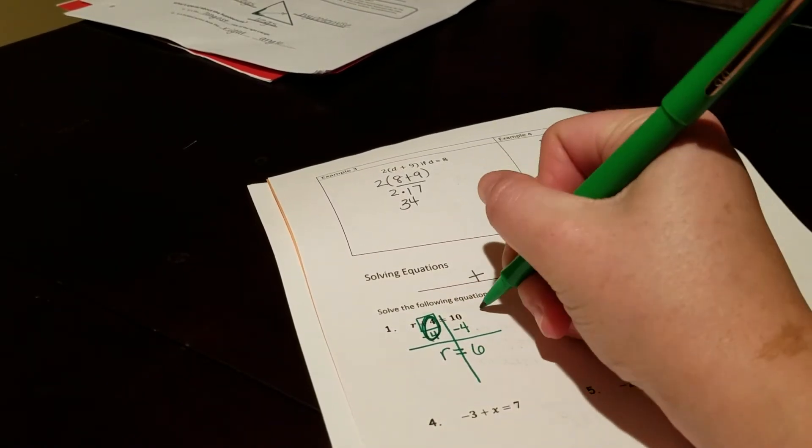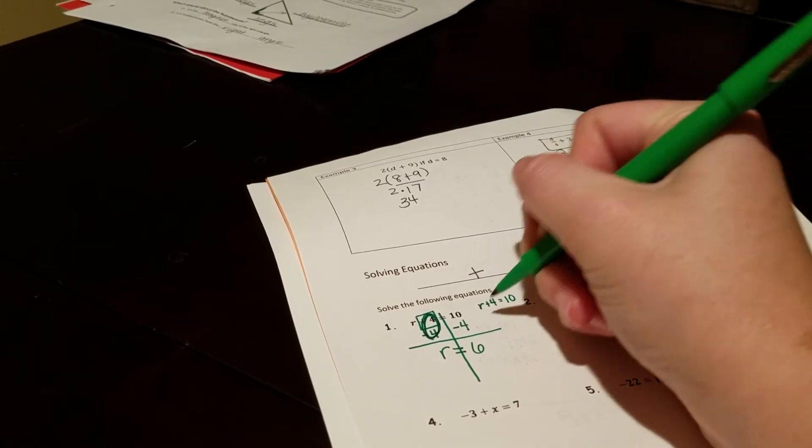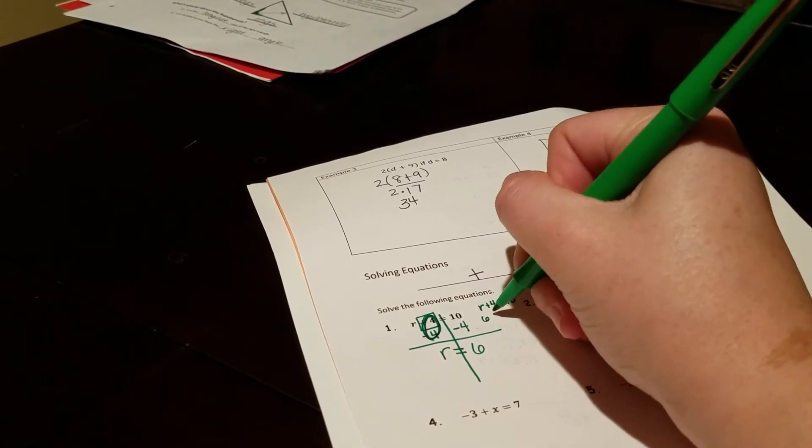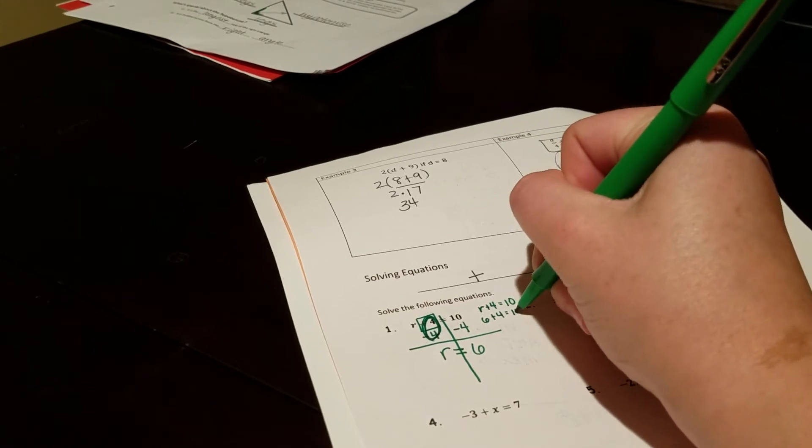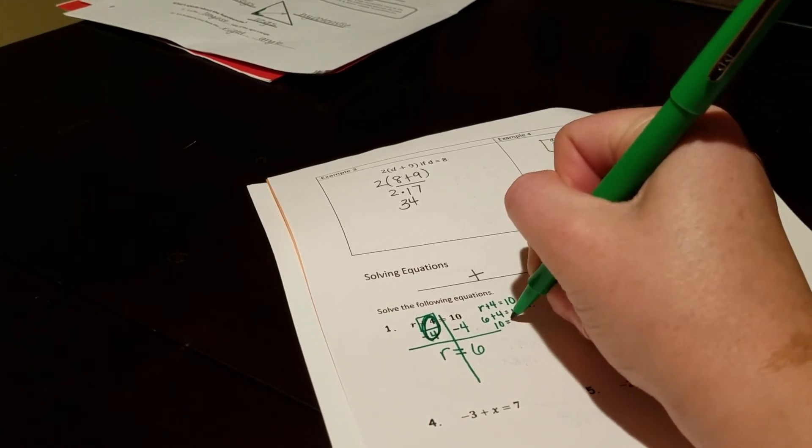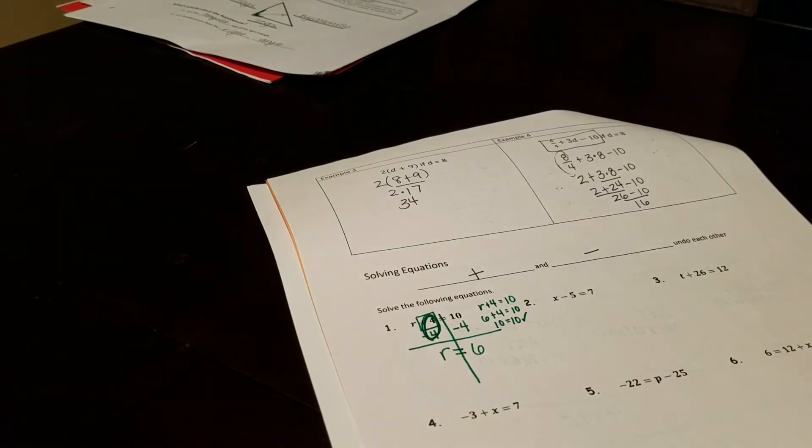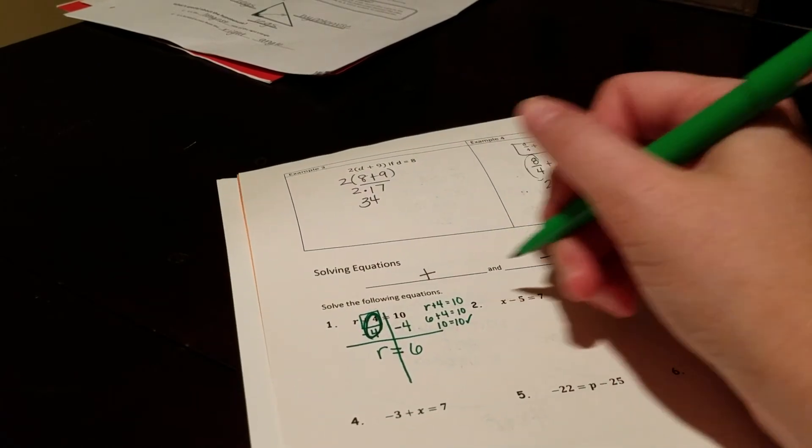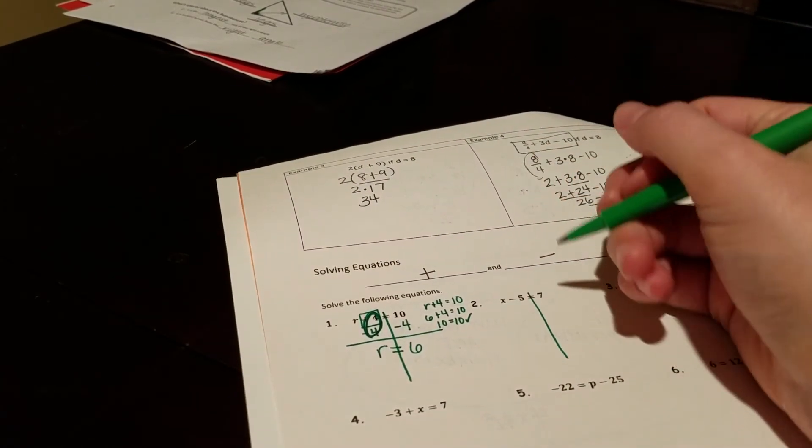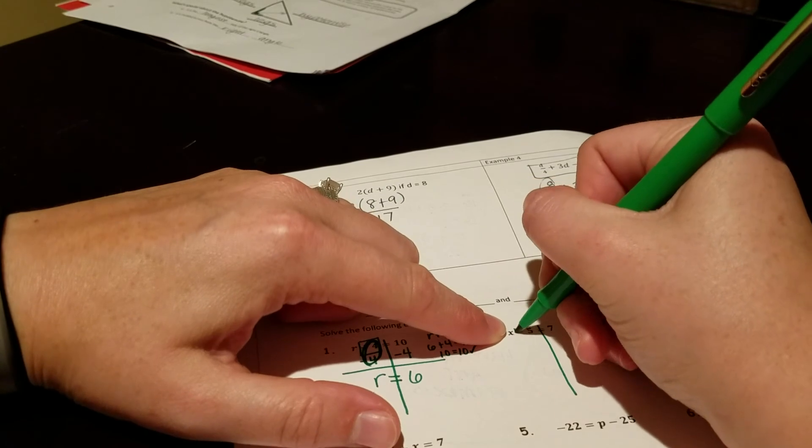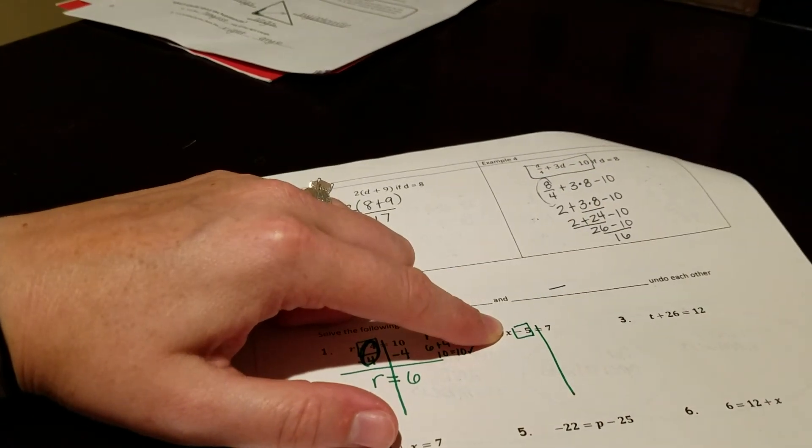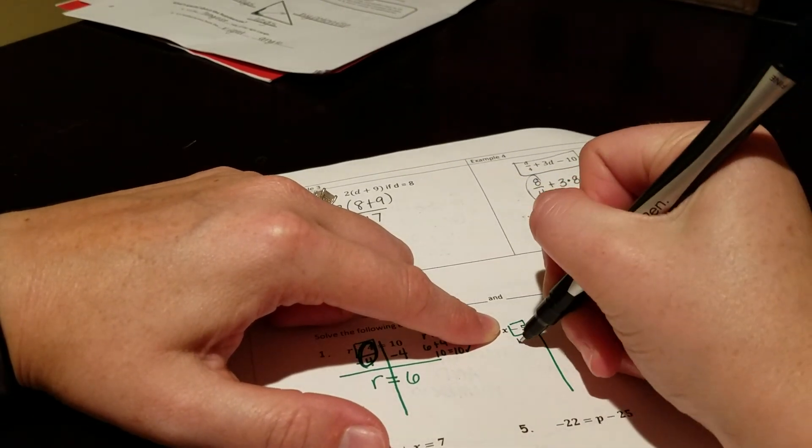What I could do, since I had r plus 4 equals 10, I could plug in 6 for r, and I should get a true statement. 6 plus 4 is 10, and 10 equals 10. That's called a check. Number 2, go ahead and drop a line. There's my letter. The minus 5 is stuck to it, so I'm going to do a plus 5.